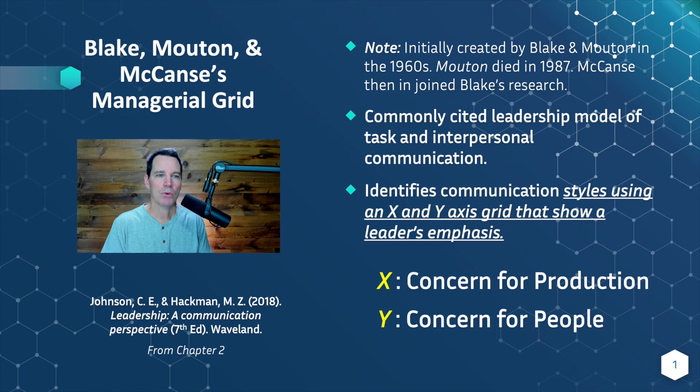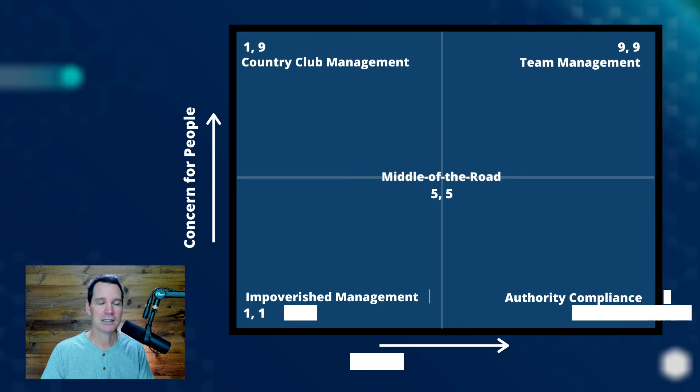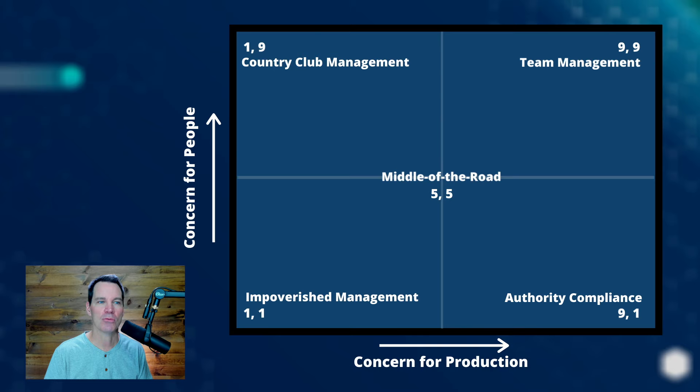What these researchers did was they created a grid with four boxes, and they gave them names and scores. So you could see where you or someone else as a leader might land based upon some kind of self-assessment or questionnaire. If you were high or low in concern for production and high or low in concern for people, you would end up with a score — one through nine — on those variables. And depending upon your score, you would land in one of these four boxes.